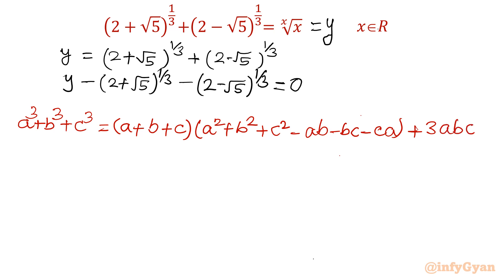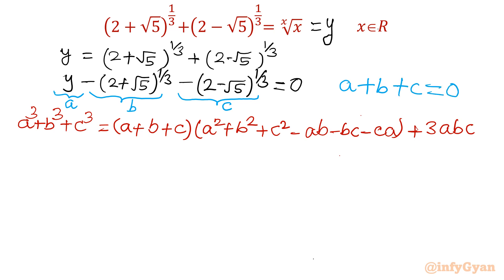I am going to use this identity. I will presume a = y, b = minus (2 + √5)^(1/3) (taking the negative sign into the consideration), and c = minus (2 − √5)^(1/3). So a + b + c equals 0, as per our equation.